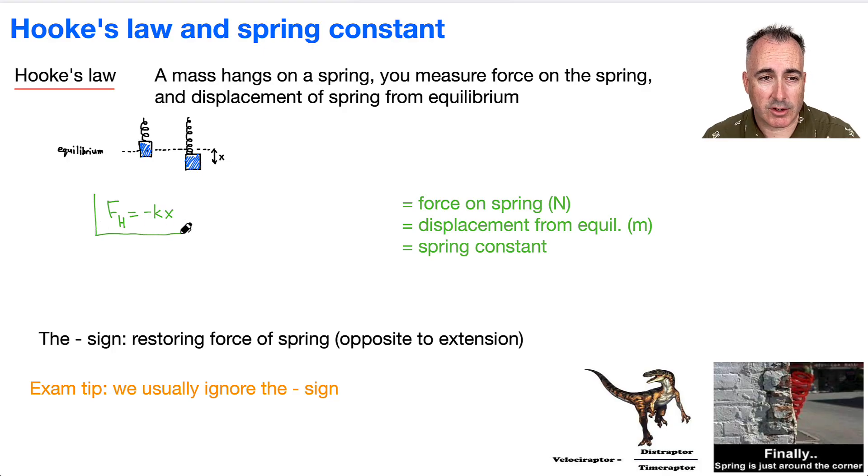And this is in your data booklet, so you don't have to memorize it. Let's make sure that we write down what everything is. So F_H is the force on the spring. X is the displacement from equilibrium in meters. And K is the spring constant.